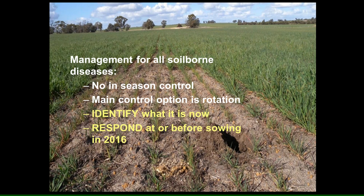With soil-borne diseases, they are not easy things to work with because there are no in-season control options. You can't go over the top of your crop and spray a fungicide to solve that problem. The main control options for soil-borne diseases are rotation. So it's very important to identify what is causing the patches or the wavy crop. You need to identify that before harvest and then respond at or before sowing in 2016.